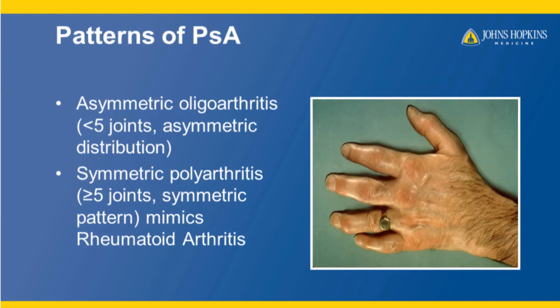There are several patterns that come with psoriatic arthritis that we will discuss. The first is asymmetric arthritis, which means there are less than five joints affected, and there is an asymmetric pattern, meaning the same joints or the same fingers are not affected on both hands. In symmetric polyarthritis, the same joints are affected in both hands. For example, both index fingers may be affected. This picture shows some swelling across what's called the PIPs, or the knuckles in between your most distant knuckle and your closest knuckle.